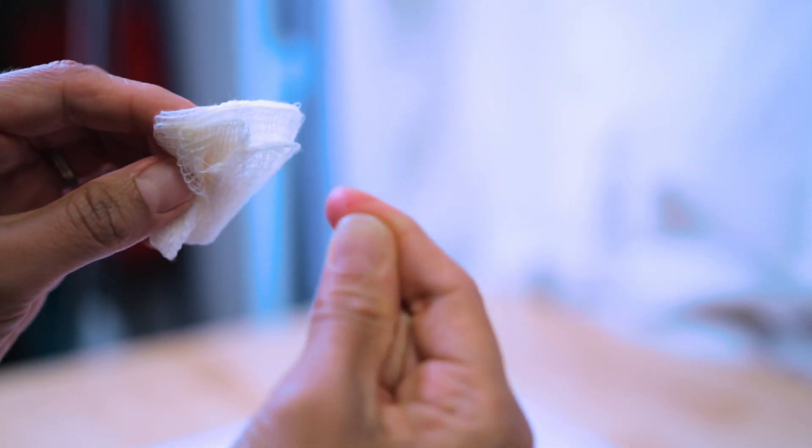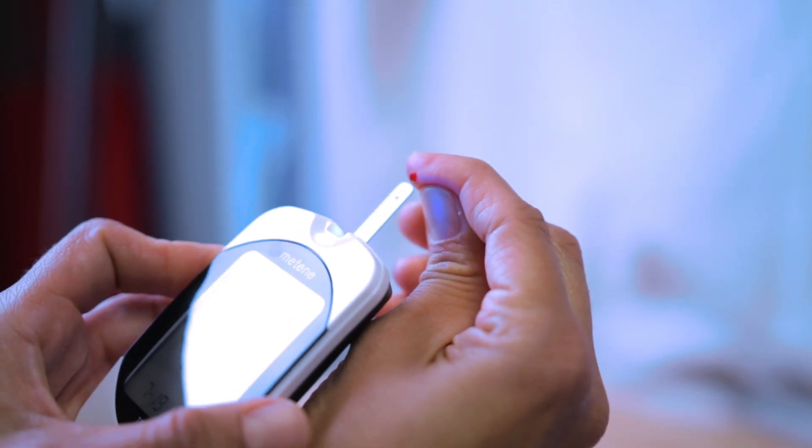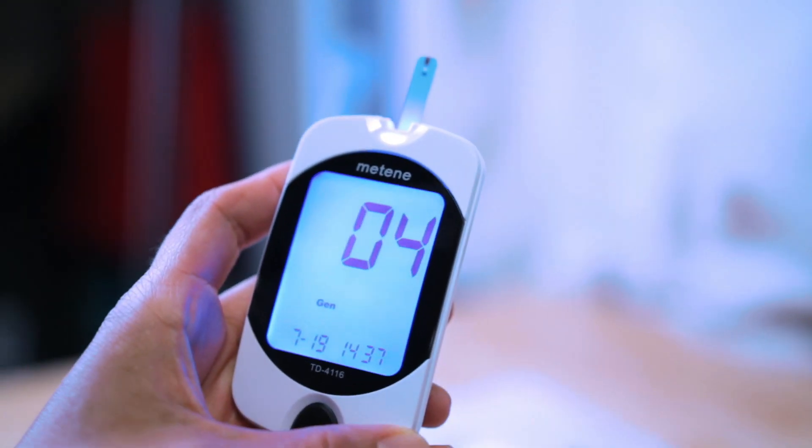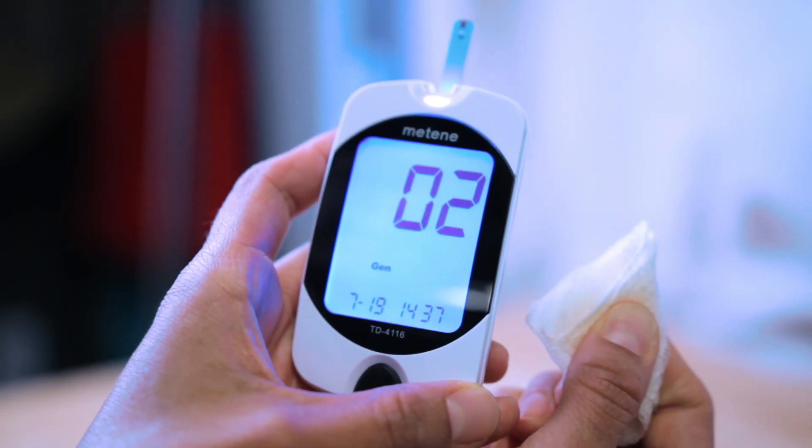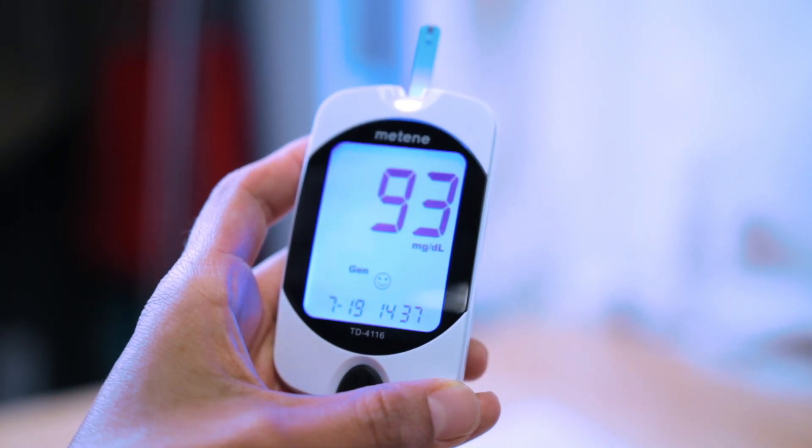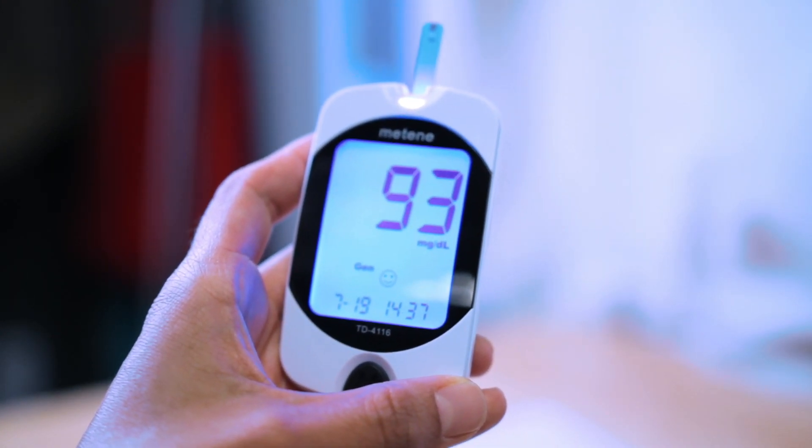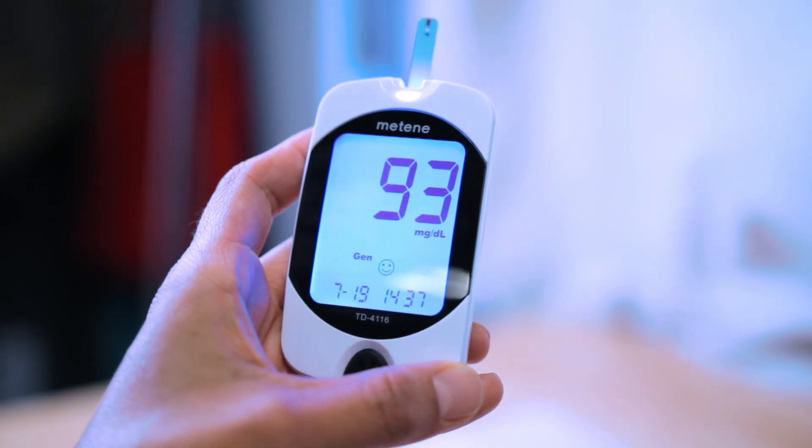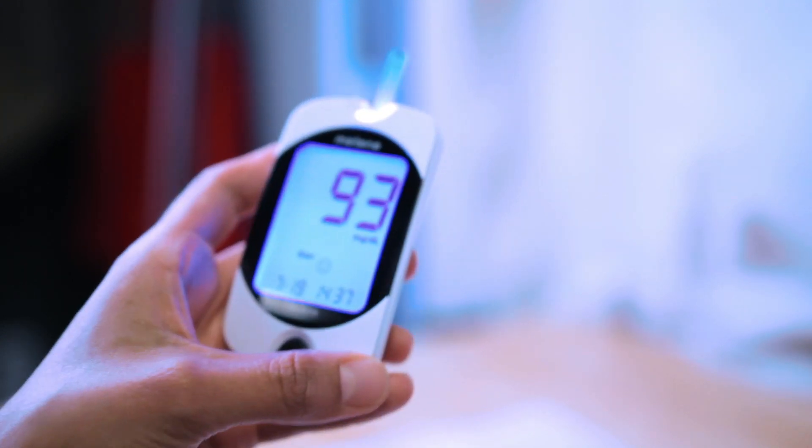to wipe off the first set of blood, and then I'm going to feed it in the machine. And then it's in a countdown. I'm going to grab the gauze and apply pressure to my finger. And there's my blood glucose level: 93 milligrams per deciliter. And then I am going to take off this strip.